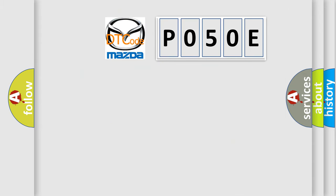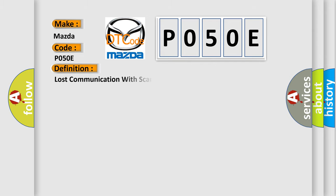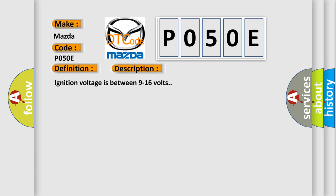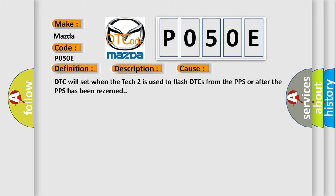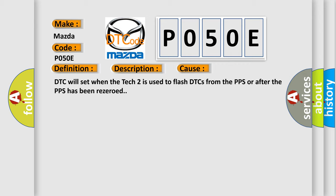So, what does the diagnostic trouble code P050E interpret specifically for Mazda car manufacturers? The basic definition is: lost communication with scan tool. The ignition voltage is between 9 to 16 volts. This diagnostic error occurs most often in the following case: the DTC will set when the TEC 2 is used to flash DTCs from the PPS, or after the PPS has been re-zeroed.